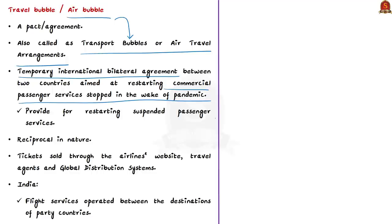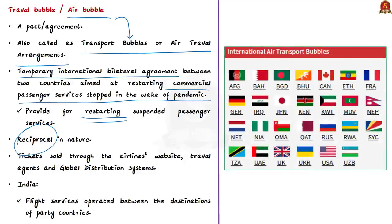These agreements provide for restarting suspended passenger services and are reciprocal in nature, meaning airlines from both countries enjoy mutual benefits. Tickets for these flights are sold through airlines' websites, travel agents, and global distribution systems. India entered into air bubble agreements with more than 25 countries, including the USA, Canada, France, Germany, UK, Maldives, UAE, Qatar, Afghanistan, and Bahrain. Under these agreements, flight services are operated between destinations of the party countries.